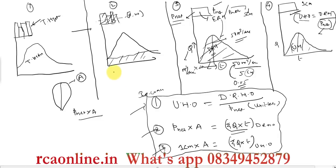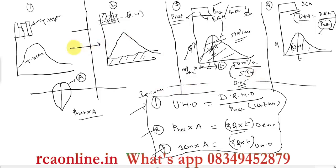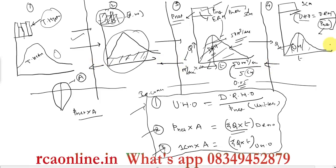One more important conclusion: the process flow diagram is a reversible process. If you can go from the first step to the fourth step, you can also come back from the fourth step to the first step. Now let's move to the numerical part.